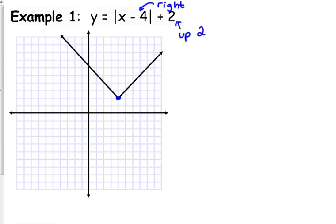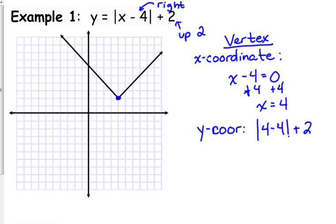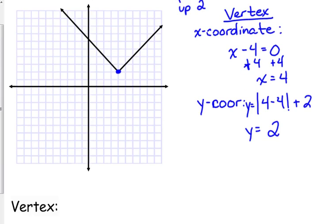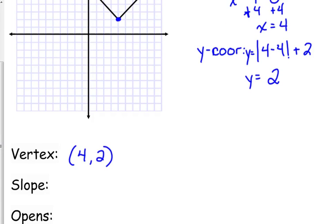Another way to find this: take what's inside the absolute value, set it equal to 0, and solve. So x minus 4 equals 0, add 4, giving x equals 4. Then plug that back in for the y-coordinate: the absolute value of (4 minus 4) is 0, plus 2 is 2. So the vertex is at (4, 2). The slope is still plus or minus 1, and this one still opens upward.